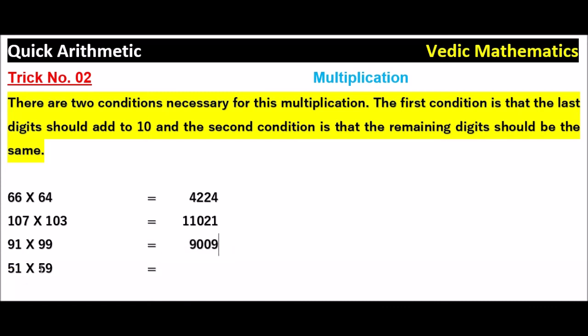Coming to 51 into 59, 1, 9 is a 9, single digit. So you write 0, 9. So what is the number after 5? It is 6, 5, 6 are 30. So 3009, this is the answer.